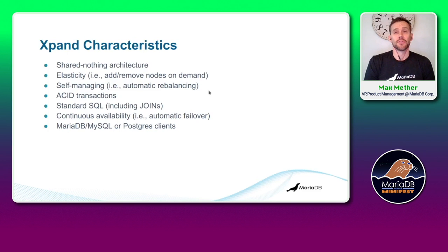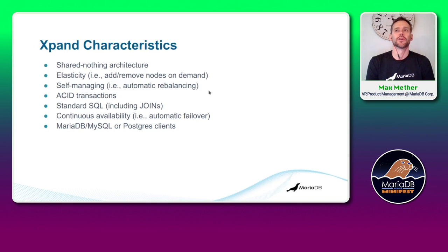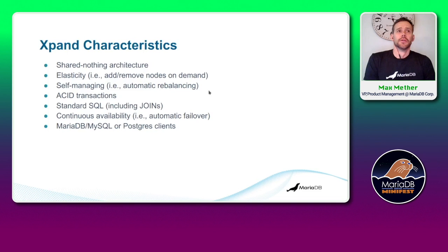It supports standard SQL. The Xpand nodes themselves, when connected directly, have a very rich SQL parser. One of the cool features is how joins are handled: they're partially executed by each node, then the result is passed to the next node for further execution — an optimized approach for distributed environments, as opposed to a nested loop join. It also has continuous availability — basically automatic, transparent failover when a node goes down, handling failovers and data distribution automatically.